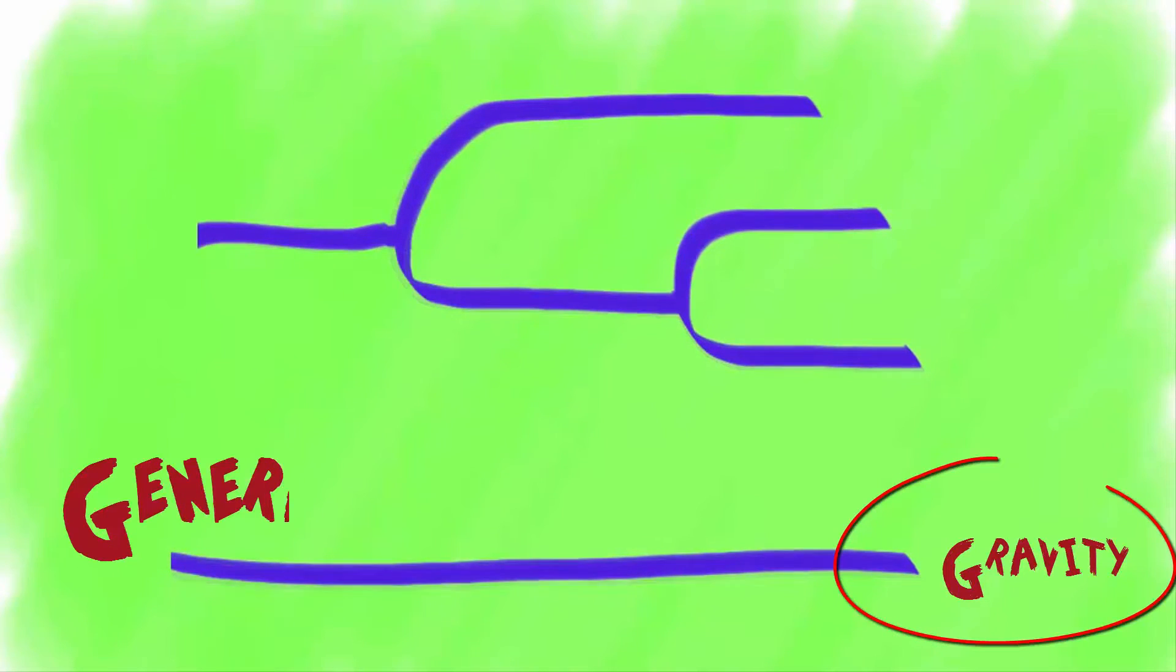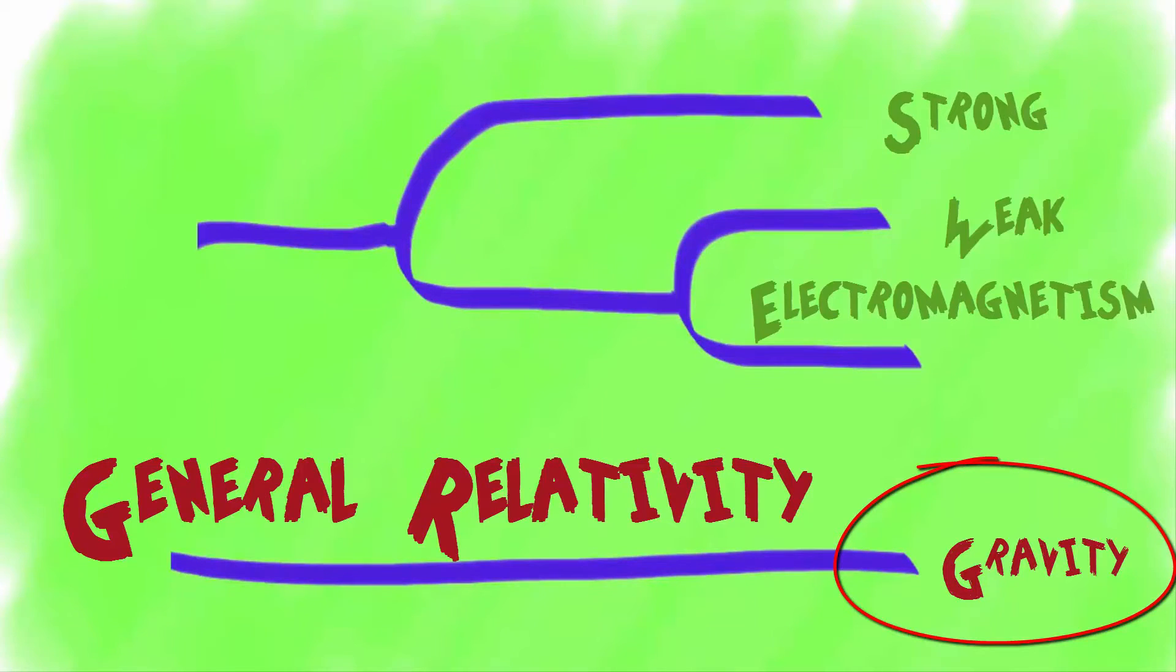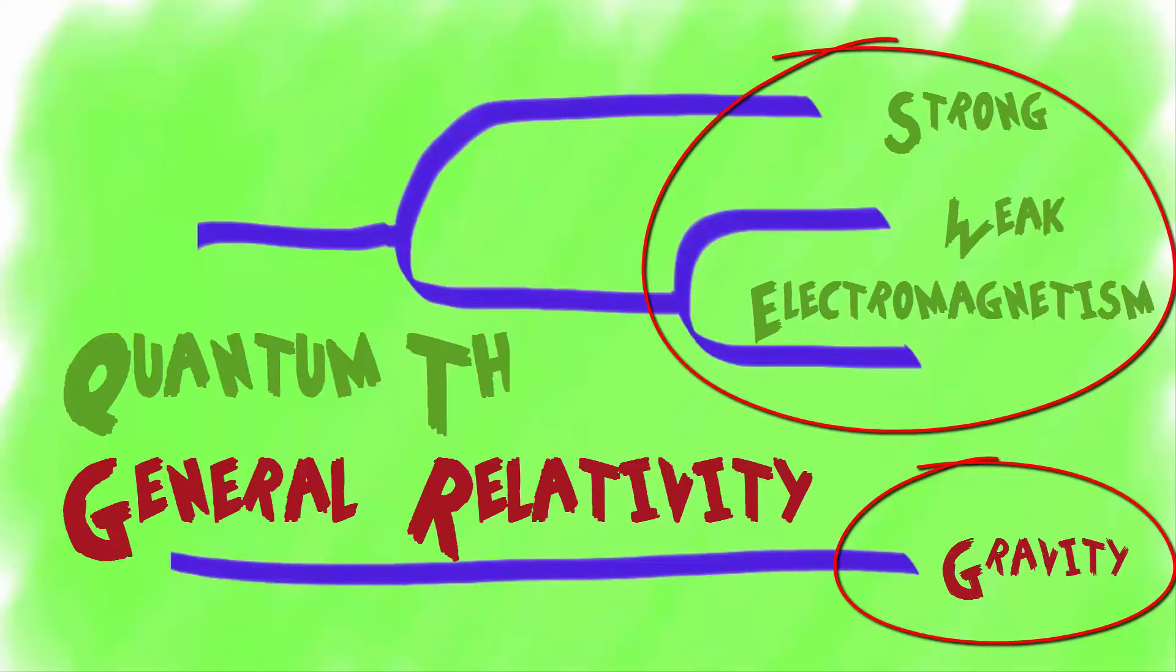Now, you may have figured out that the first force, gravity, is described by general relativity. While the other three forces, electromagnetism, strong nuclear and weak nuclear forces, are described by quantum theory.